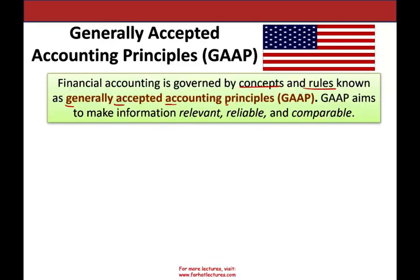It's pronounced like the store Gap, but it's G-A-A-P. Notice it's generally accepted — it's not set in stone. GAAP aims to make information relevant, reliable, and comparable. It has other characteristics beyond those three, but since this is an introductory course, we'll only discuss these three briefly. For more, go to my intermediate accounting course.